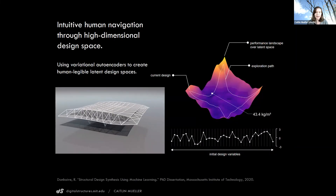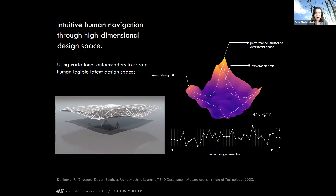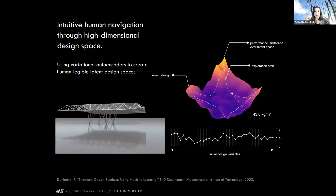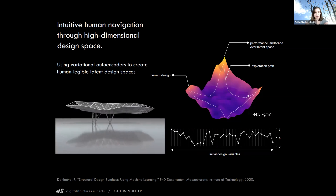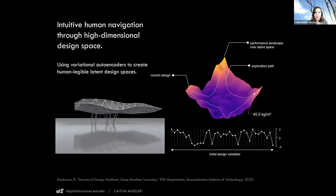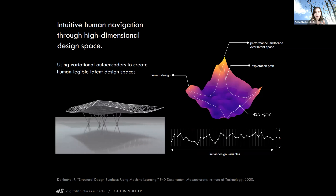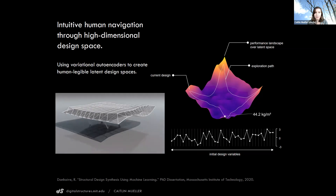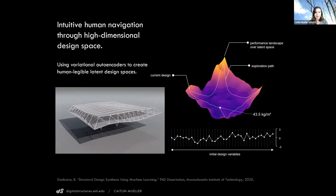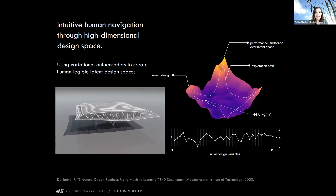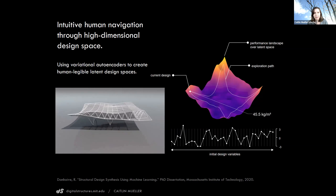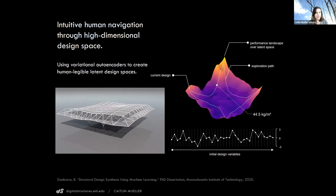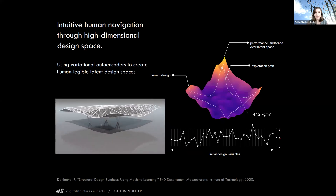One of the ways I'm working on this recently is by using new emerging methods from machine learning — in this case deep learning — to compress a really high-dimensional design space of possible geometries for a long span roof truss and turn it into a human-navigable landscape of high performing designs that are also really different from each other. The purple and orange landscape is a two-dimensional latent space that you can click on to find different designs, and you can see that the geometry is varying smoothly but also fairly significantly.